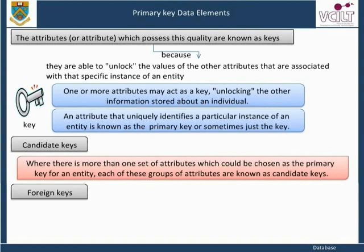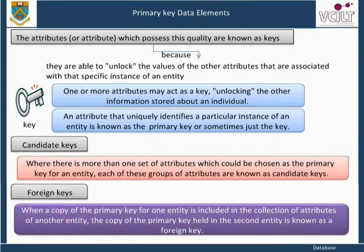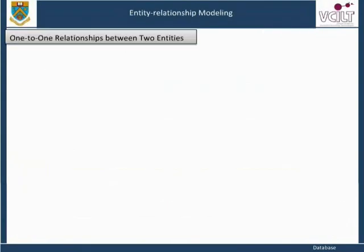Foreign keys: when a copy of the primary key for one entity is included in the collection of attributes of another entity, the copy of the primary key held in the second entity is known as a foreign key. A foreign key enables a link to be made between entities in one-to-one relationships between two entities.